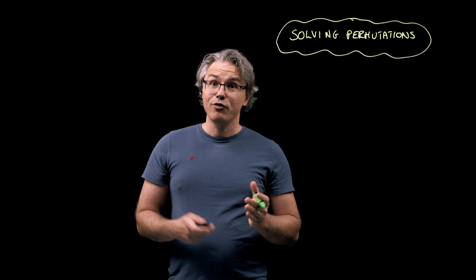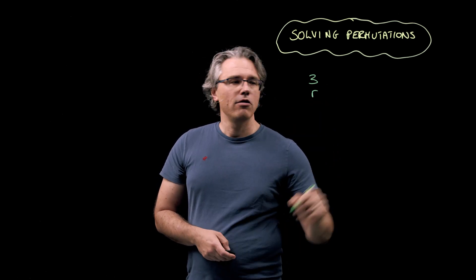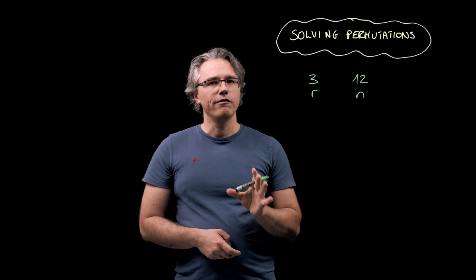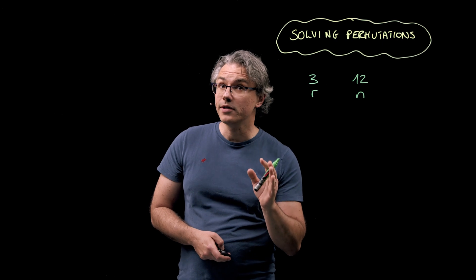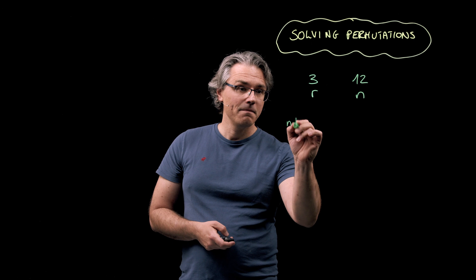So this problem requires counting the number of ways in which we can choose three stocks, let's denote this as R, from a total of 12. Let's call this N. Going back to the scenario for a moment, we were told that the stocks would be ranked, implying that the order in which the three stocks are listed is of importance. And you should already know that this is formally called a permutation, which we normally denote as NPR.